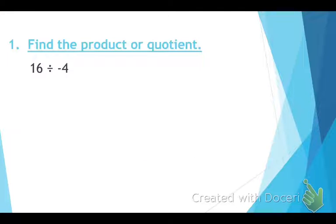Okay, problem number one, just write what the correct answer is, find the product or quotient. All right, so for this first one, 16 divided by negative 4, you guys did excellent. We had one negative there, so the answer has to be negative, and the final answer was negative 4.